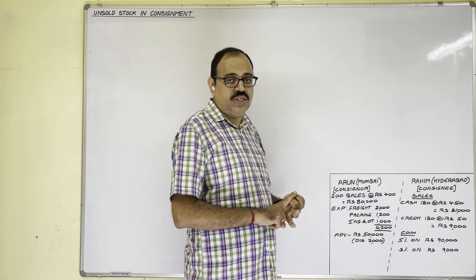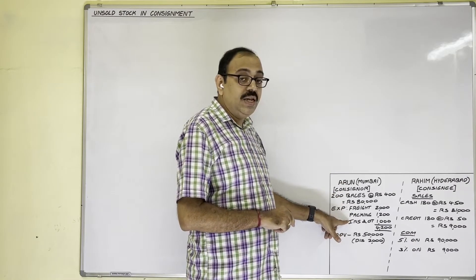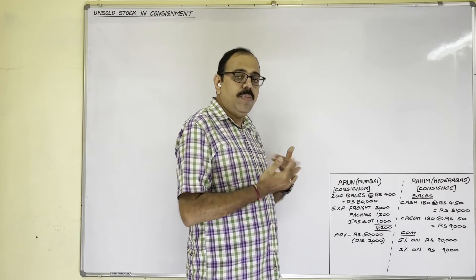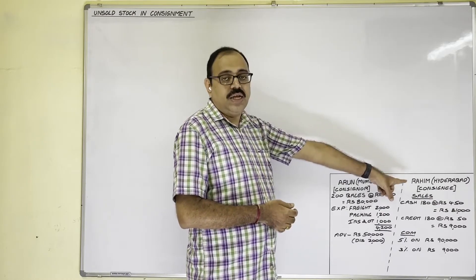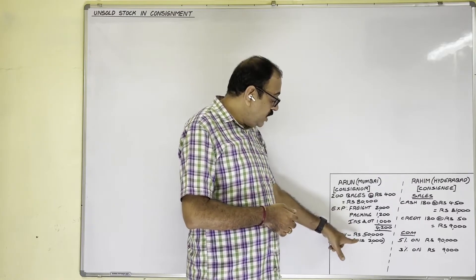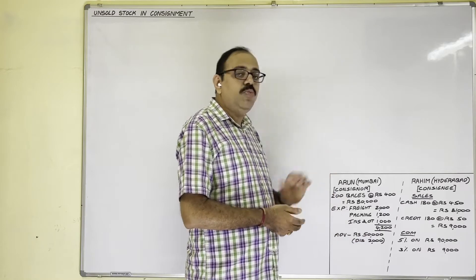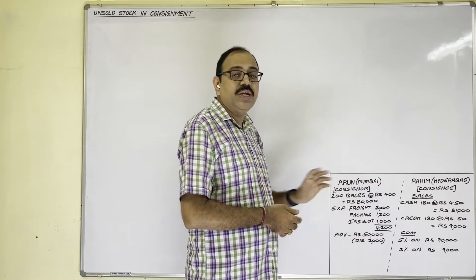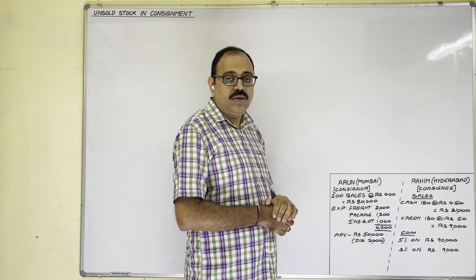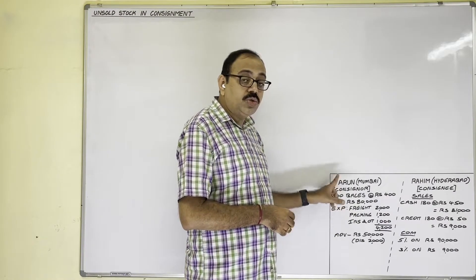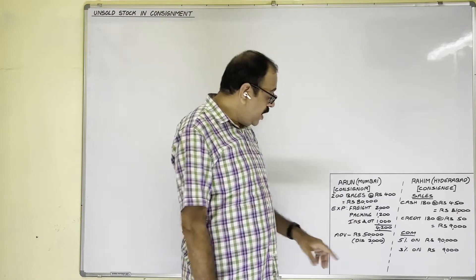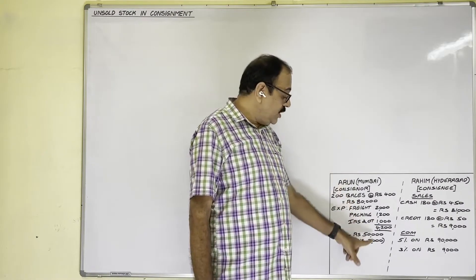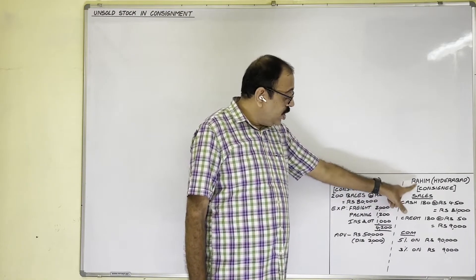Here Arun is demanding the advance in the form of a bill of exchange. This bill becomes bills receivable for the consignor and bills payable for the consignee. The advance amount is 50,000 rupees for two months. Since the consignor needs this amount immediately, he went to the bank and sold this bill. The bank deducted 2000 rupees and gave the remaining 48,000 rupees to Arun — this is known as discounting of bills of exchange. Rahim sold 180 bales out of 200 sent, so 20 bales are unsold.